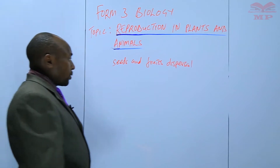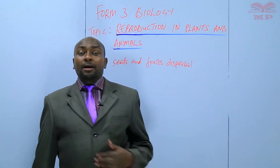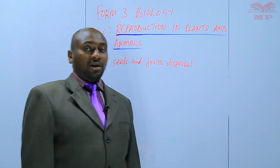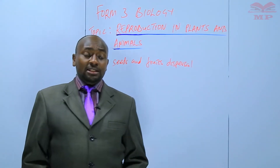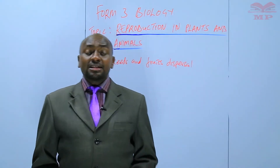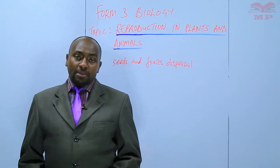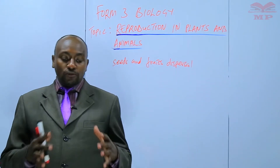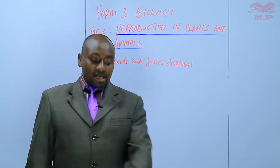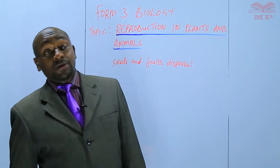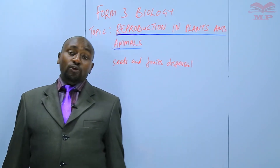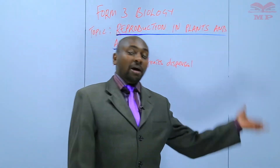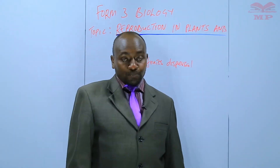The first thing is that seeds and fruits are dispersed together. It is important that when the seeds and fruits are dispersed, we minimize overcrowding. If all the seeds or fruits within a plant fall in one place and germinate there, there will be a lot of overcrowding and competition for nutrients, for light, and so on.